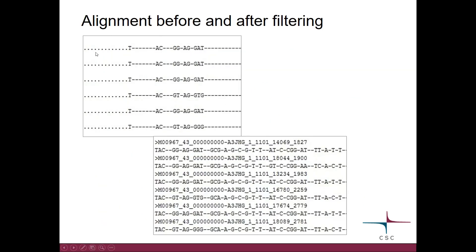Here you can see what the alignment looks like before and after filtering. The dots leading to the first base have disappeared. You can also see that columns which contain only gaps in all the sequences have disappeared — so now T, A, C come next to each other. Also, a gap which previously had three bases has been reduced to two. The alignment has become much more compact.